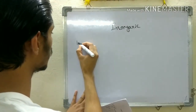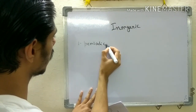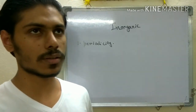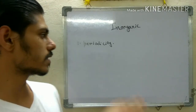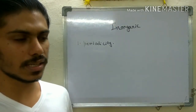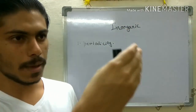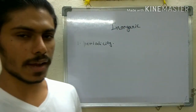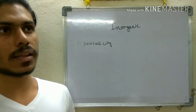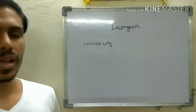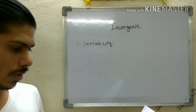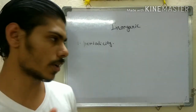The first topic is chemical periodicity. This is a topic you have been learning since class 11 or 12, so it is very well known. What you have to do is just revisit the trends along the series, along the group, along the row, along the period — ionization potential, electronegativity, acidity of oxy-acids, basicity of oxides, etc. Generally one or two questions come from this topic, so it is a very easy topic and you must do it.